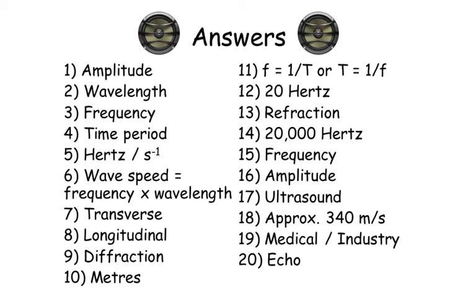Number six: wave speed equals frequency times wavelength. Number seven: transverse. Number eight: longitudinal. Number nine: diffraction.